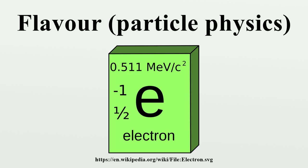On the other hand, a fermion of a fixed mass is normally a superposition of various flavors. As a result, the flavor content of a quantum state may change as it propagates freely. The transformation from flavor to mass basis for quarks is given by the Cabibbo–Kobayashi–Maskawa matrix. This matrix is analogous to the PMNS matrix for neutrinos, and defines the strength of flavor changes under weak interactions of quarks. The CKM matrix allows for CP violation if there are at least three generations.